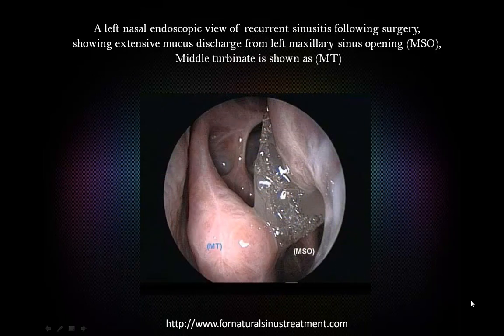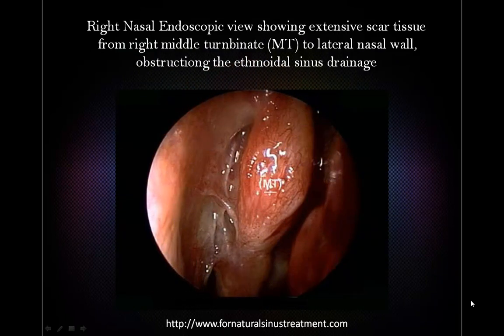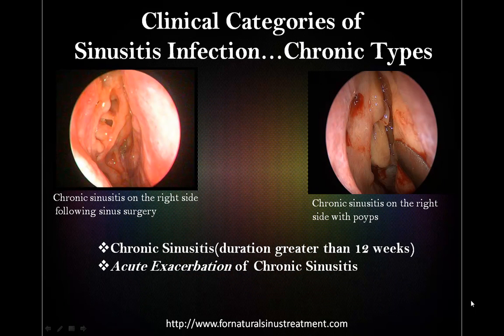Now we can see some pictures. This is a left nasal endoscopic view showing recurrent sinusitis following surgery with extensive mucous discharge from the left maxillary sinus opening. And a right nasal endoscopic view showing extensive scar tissue from the right middle turbinate, a lateral nasal wall obstructing ethmoidal sinus drainage. Here are the clinical categories showing chronic sinusitis infection. The left image shows chronic sinusitis on the right side following sinus surgery, and the right image shows chronic sinusitis with polyps.